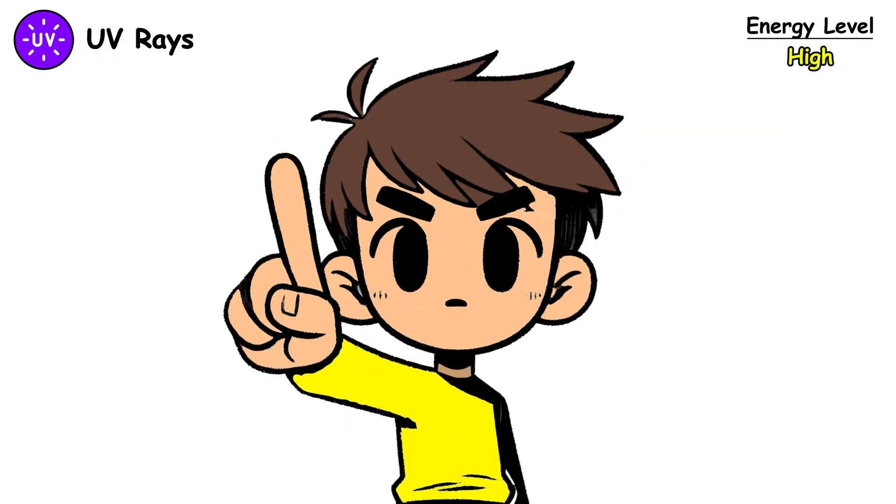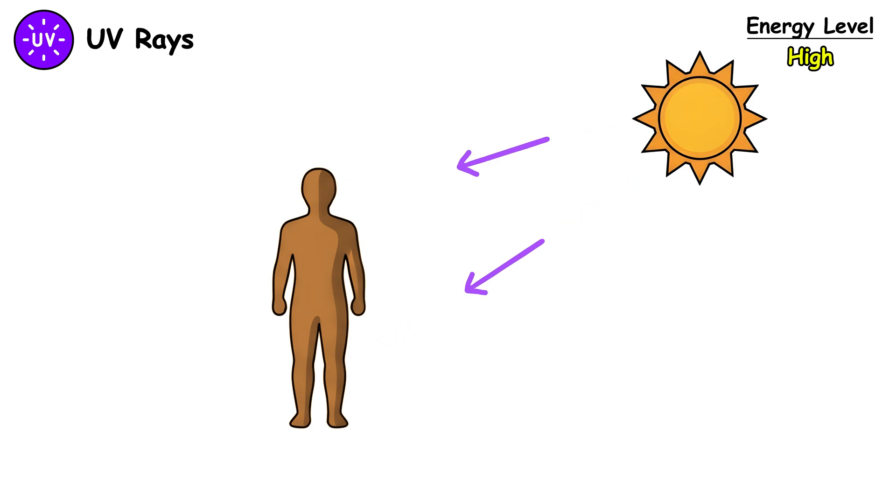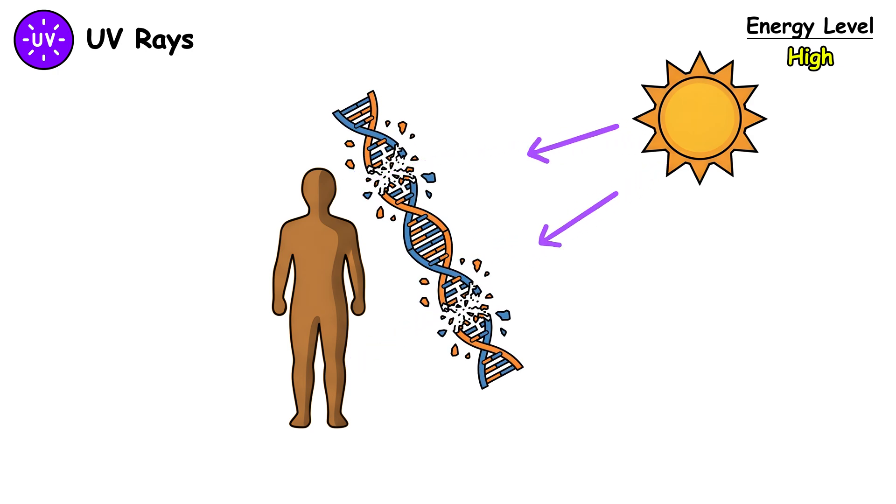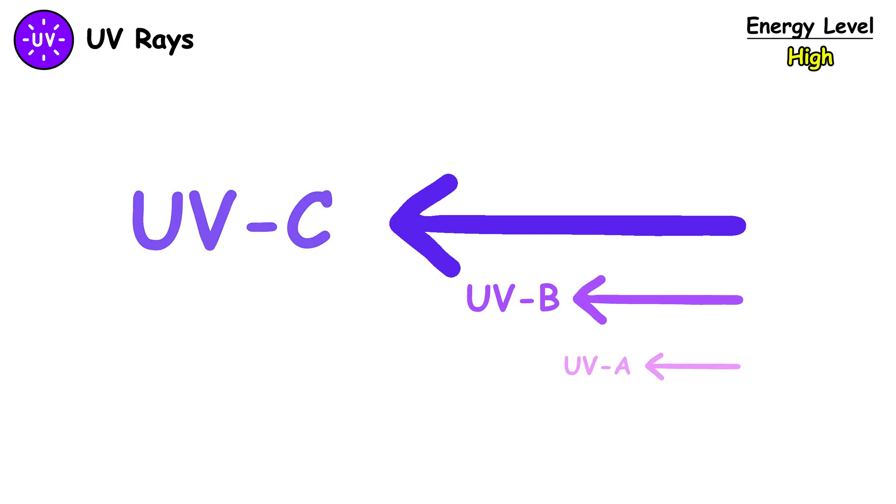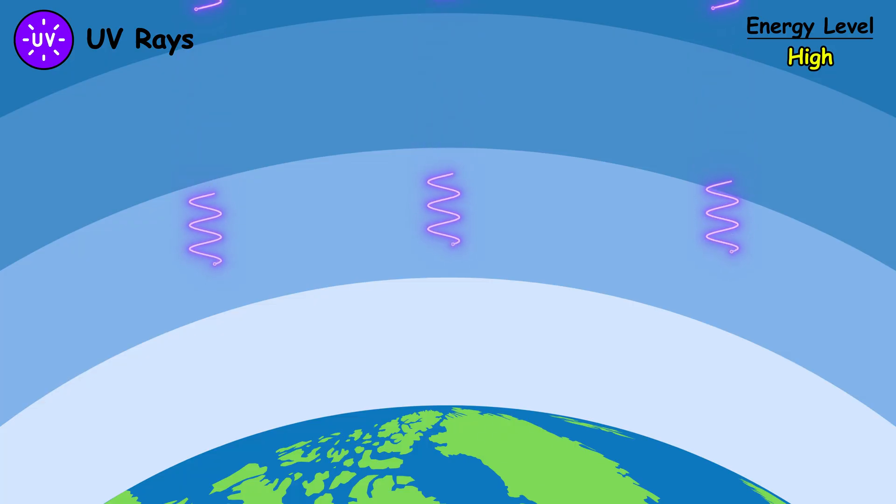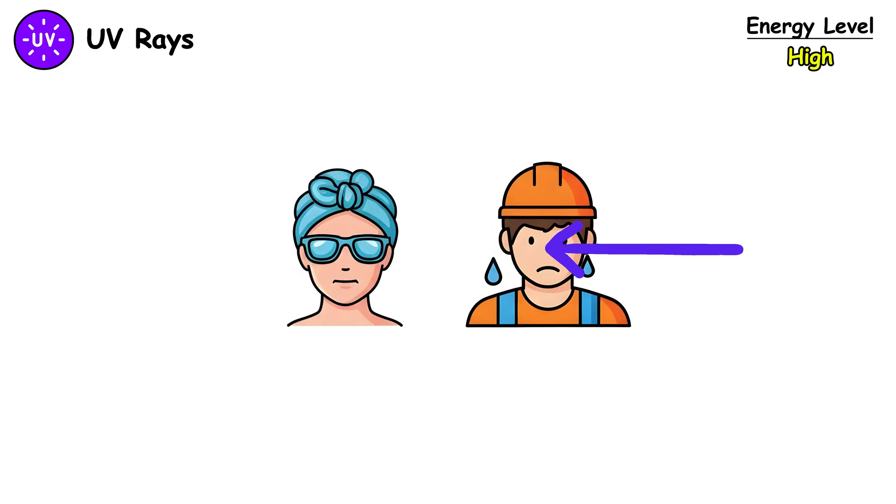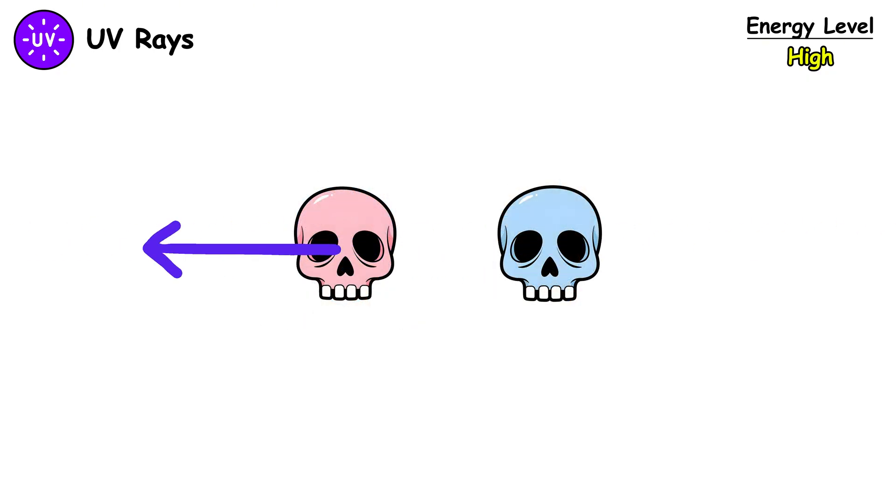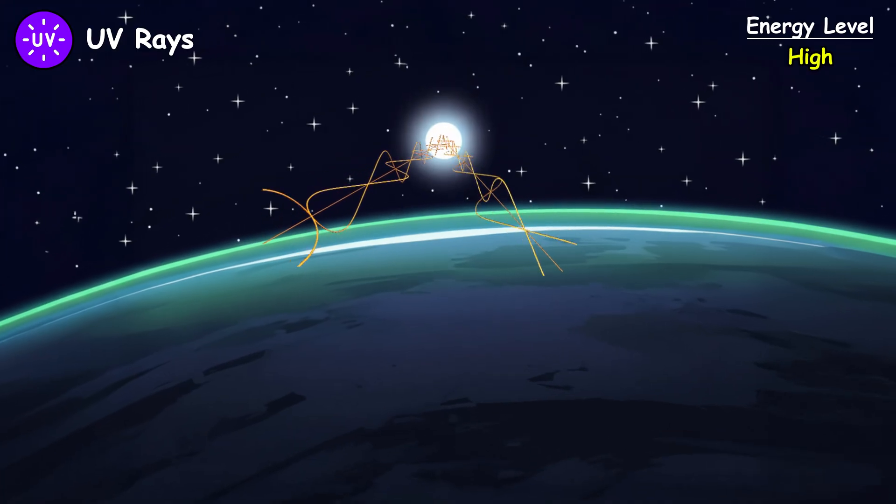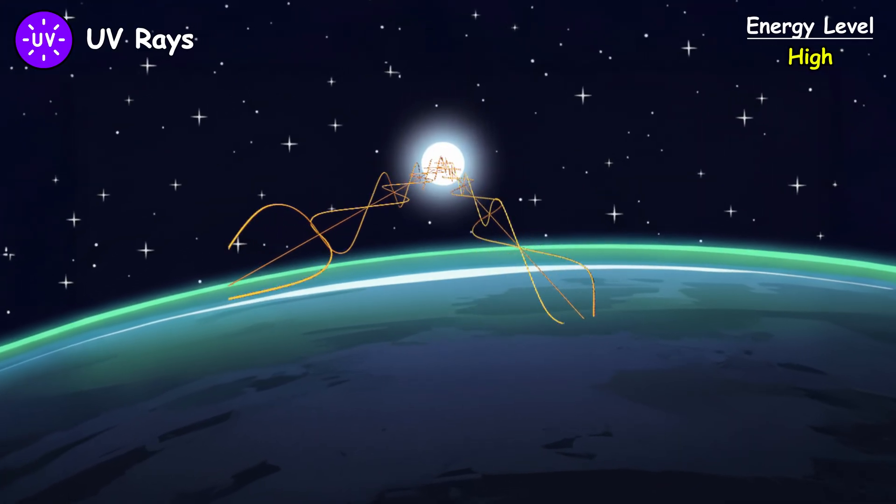However, contrary to popular belief, that tan is actually evidence of DNA damage, not a sign of health. UVC, the most dangerous UV type, gets completely absorbed by Earth's ozone layer. Even brief exposure causes severe burns and rapid DNA destruction. If this one reached the surface, life as we know it would be impossible.